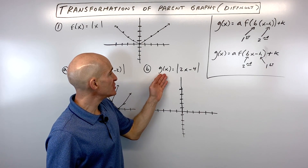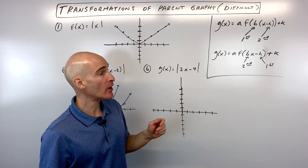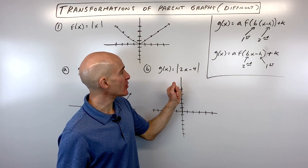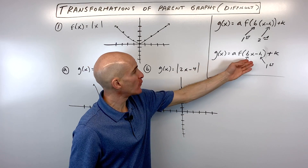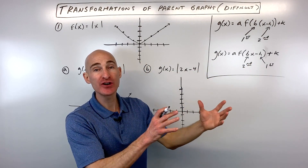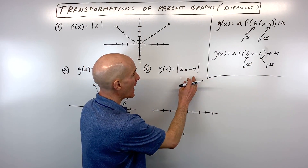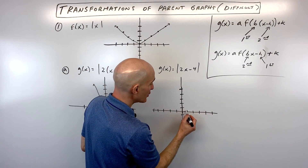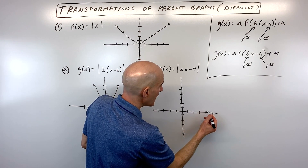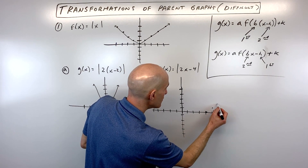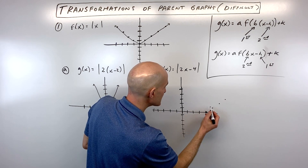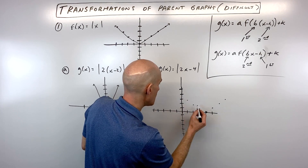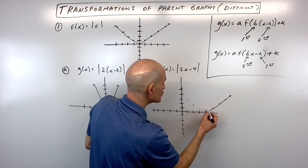Now for letter B, g(x) = |2x − 4|. Notice the 2 is not factored out. In this form, we do the horizontal shift first. The minus 4 tells us this graph shifts right 4, so the vertex moves to x = 4. The graph goes up with a slope of 1 from that new vertex.